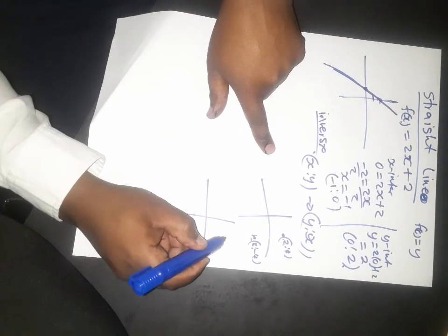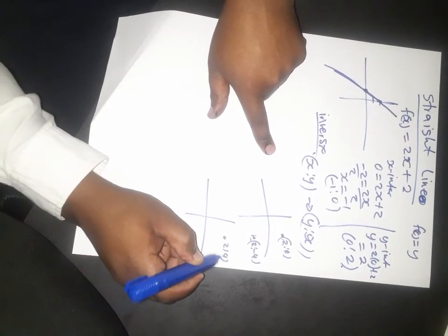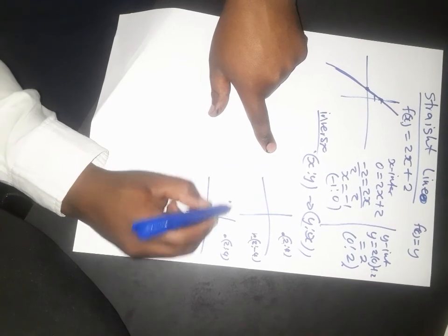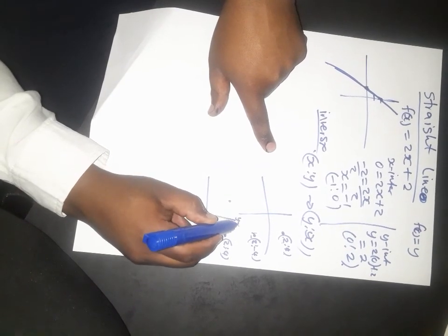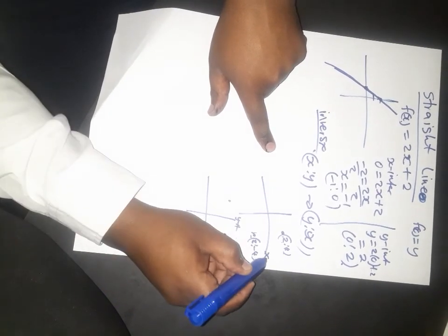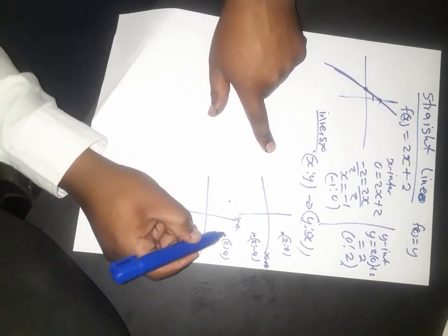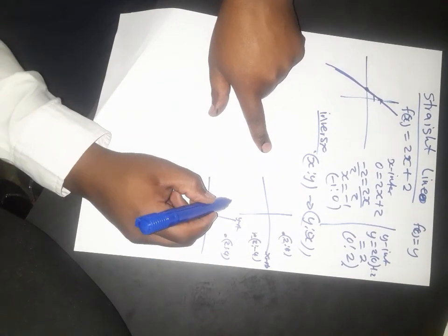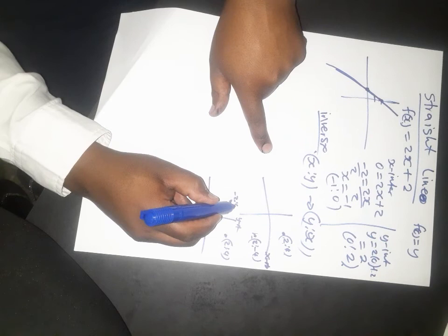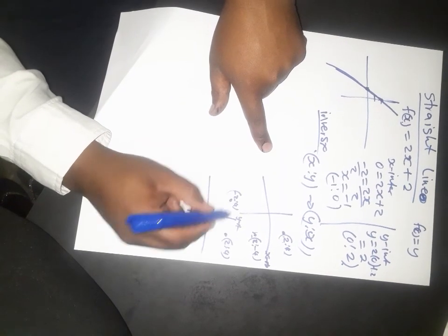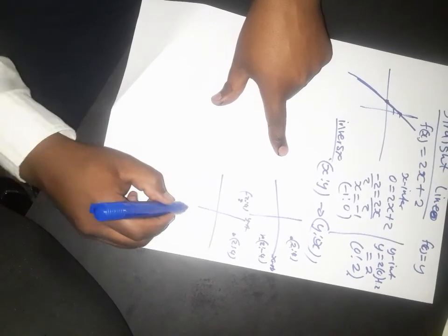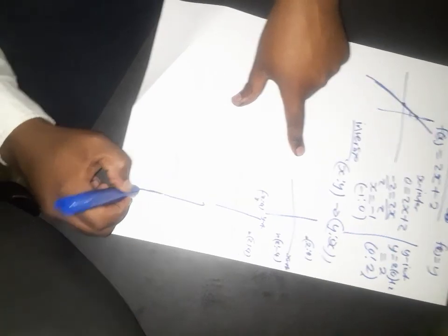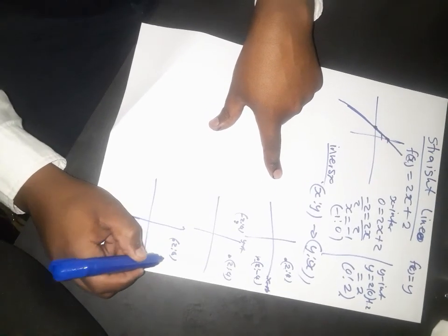Let's say now we are reflecting the same point (2, 4) across the y-axis. When we reflect across the y-axis, the point becomes (-2, 4). So for reflection about the y-axis, the point (2, 4) becomes (-2, 4).